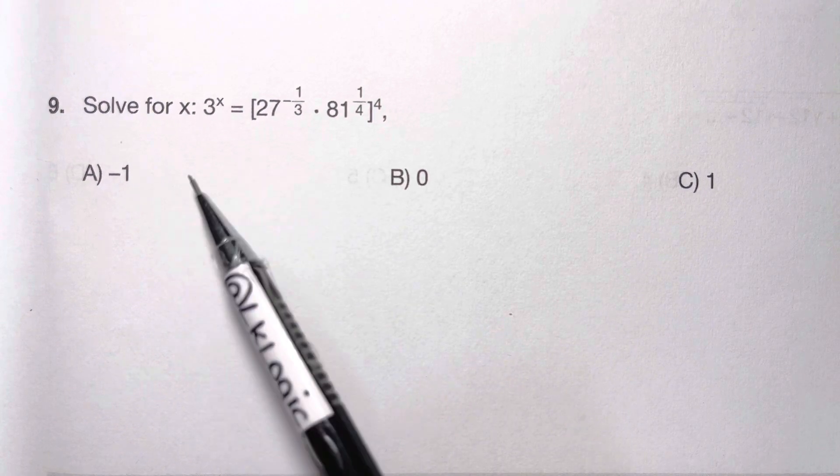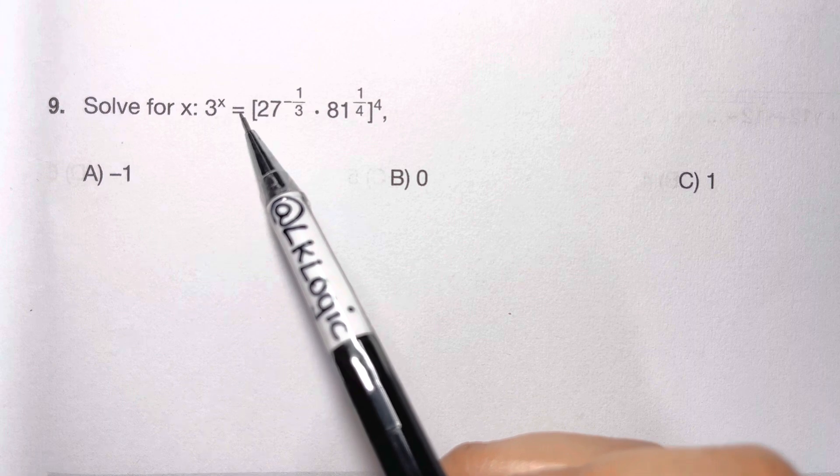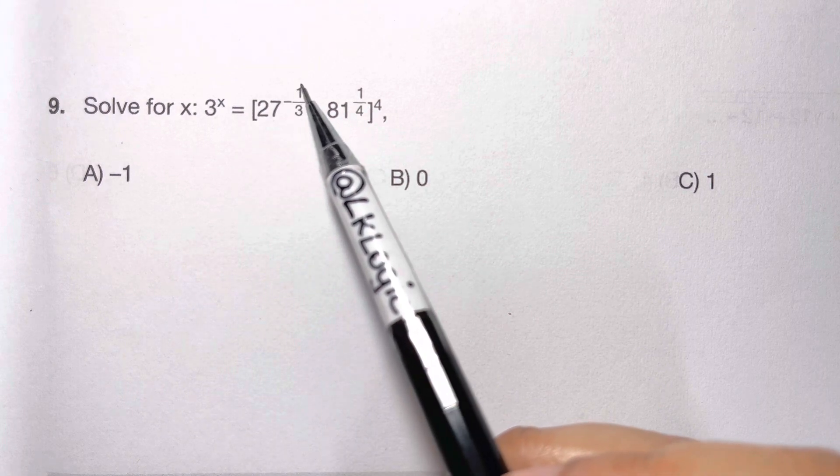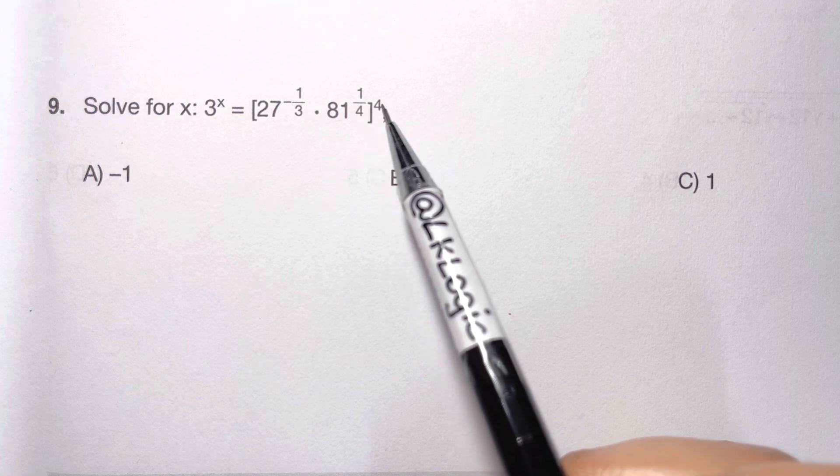Hi everyone, in this Math Olympiad question we're going to solve for x in 3 to the power of x equals 27 raised to negative one-third times 81 to the power of one-fourth, all to the power of 4.